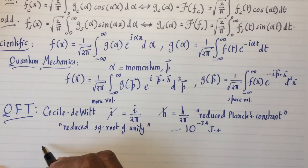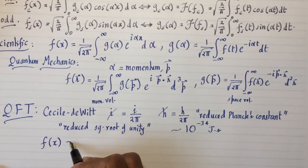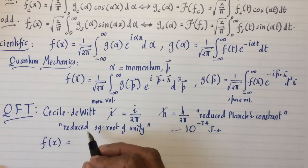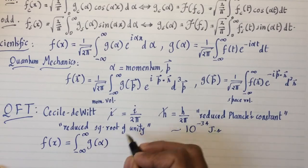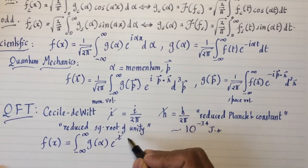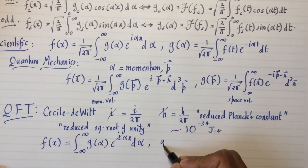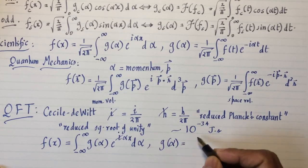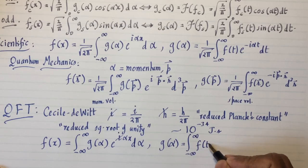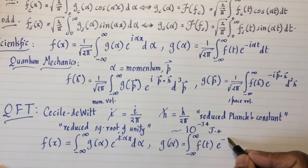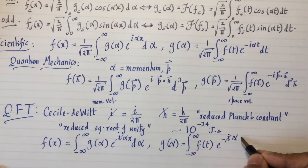So in this normalization, no constants at all. f of x is the integral from minus infinity to infinity, g of alpha, e to the i slash alpha x d alpha. And then g of alpha is integral minus infinity to infinity, f of t, e to the minus i slash alpha t dt.